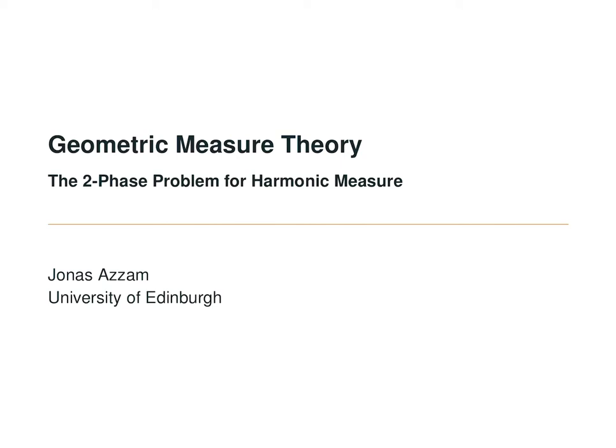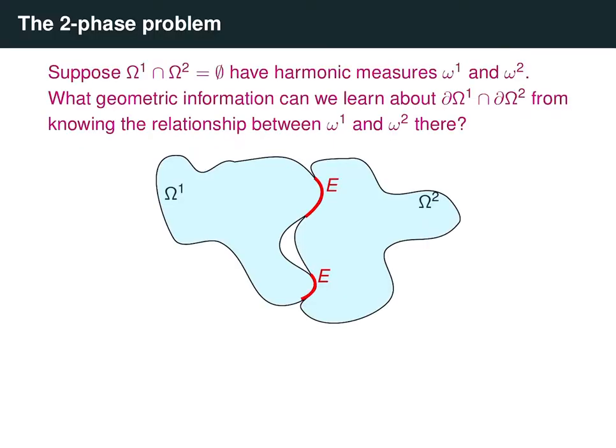In this video, we study a really neat application of tangent measures to harmonic measure: the two-phase problem. We saw in an earlier video that if harmonic measure is absolutely continuous with respect to Hausdorff measure, that implies harmonic measure is actually rectifiable, and so the boundary of its domain contains a rectifiable subset of positive measure.